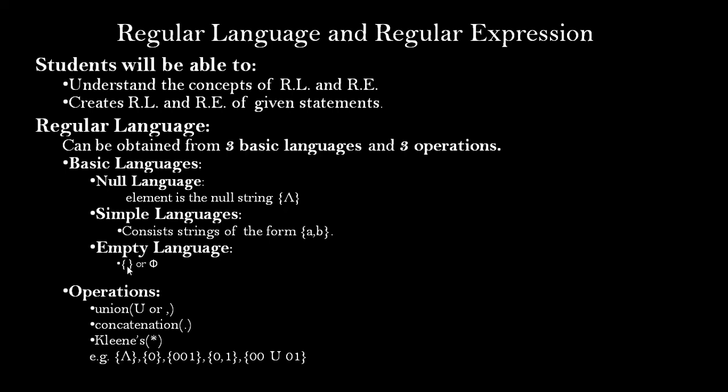Along with these three basic languages, there are also three operations. Two of these are binary operations and one is a unary operation. A unary operation requires only one operand; binary operations require two operands. The first operation is union — we require two languages and combine their strings to get another regular language. Union is represented by the symbol U or comma.